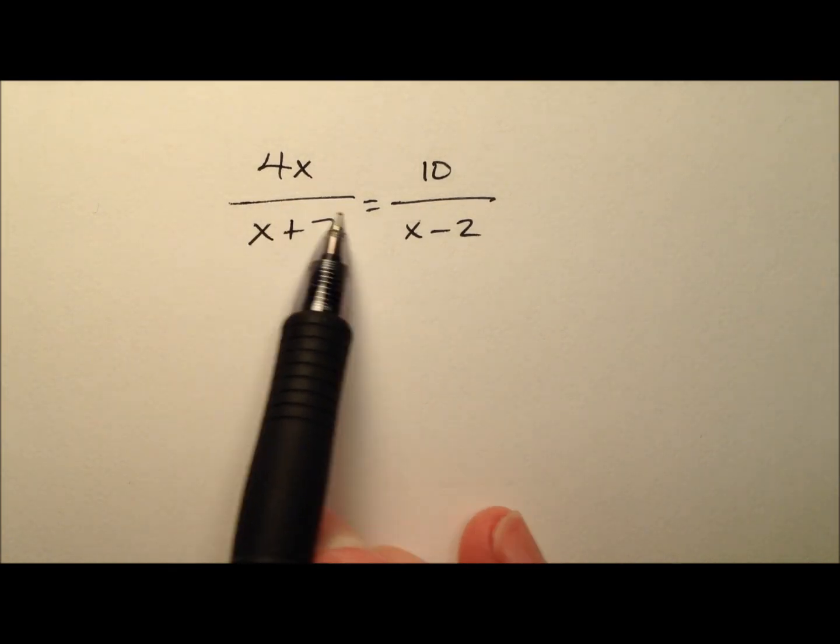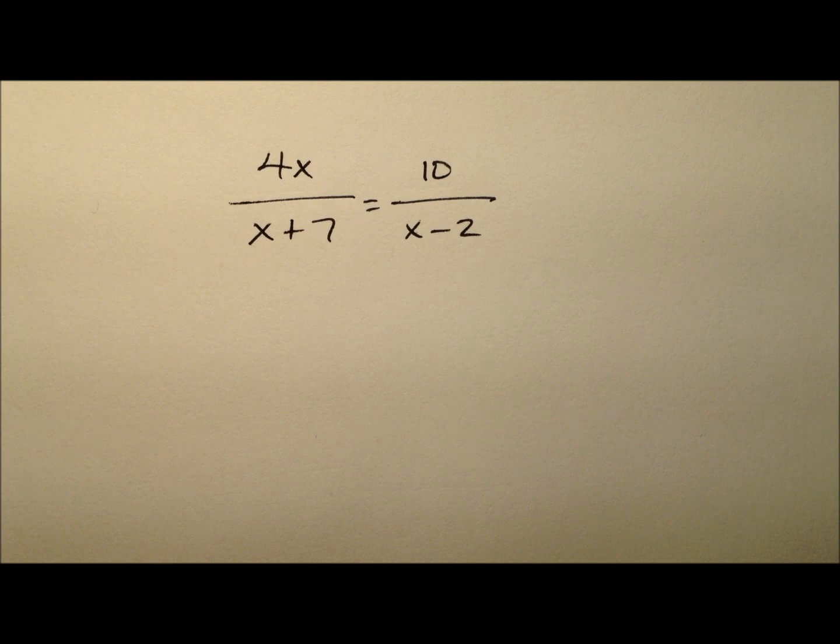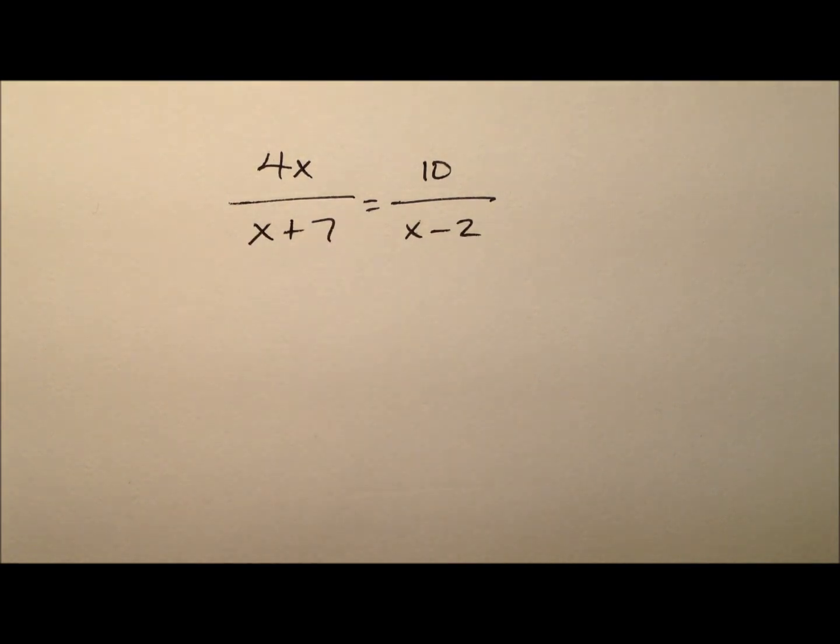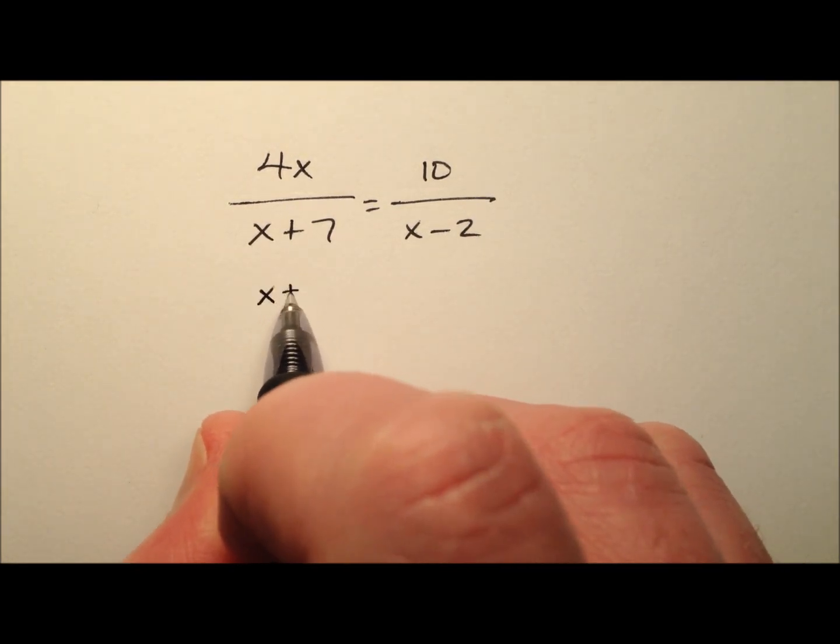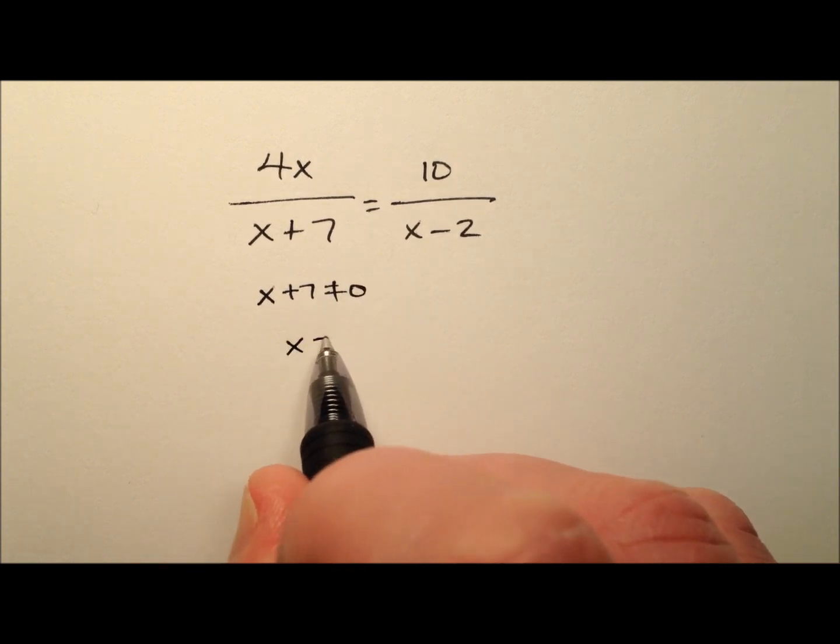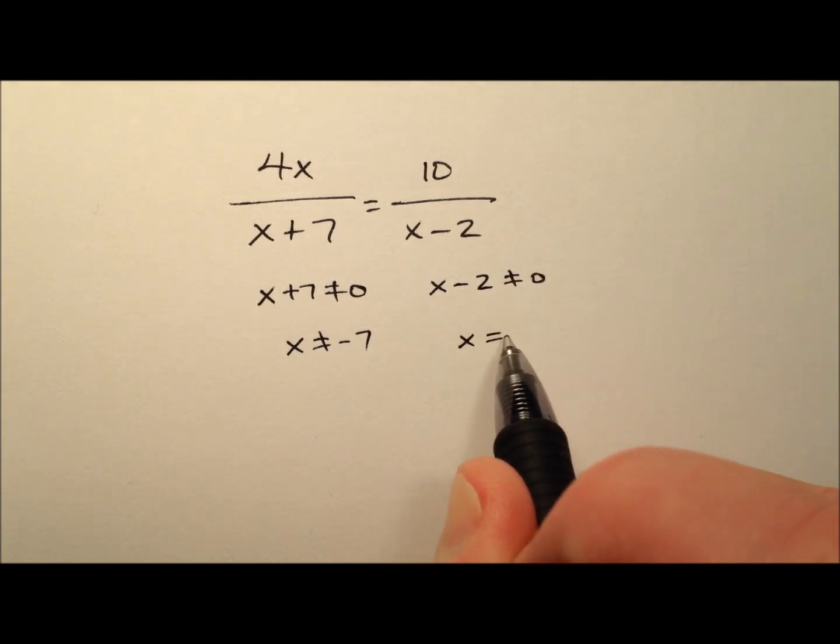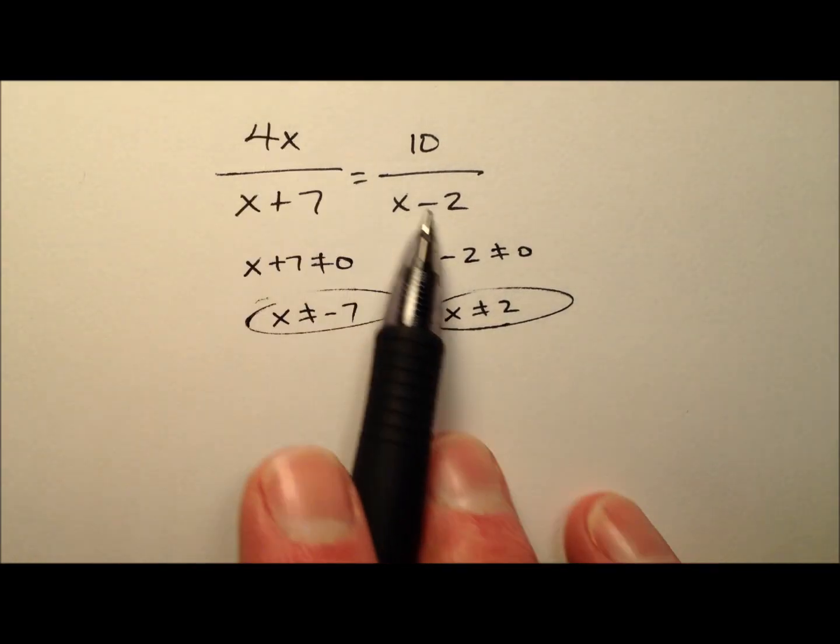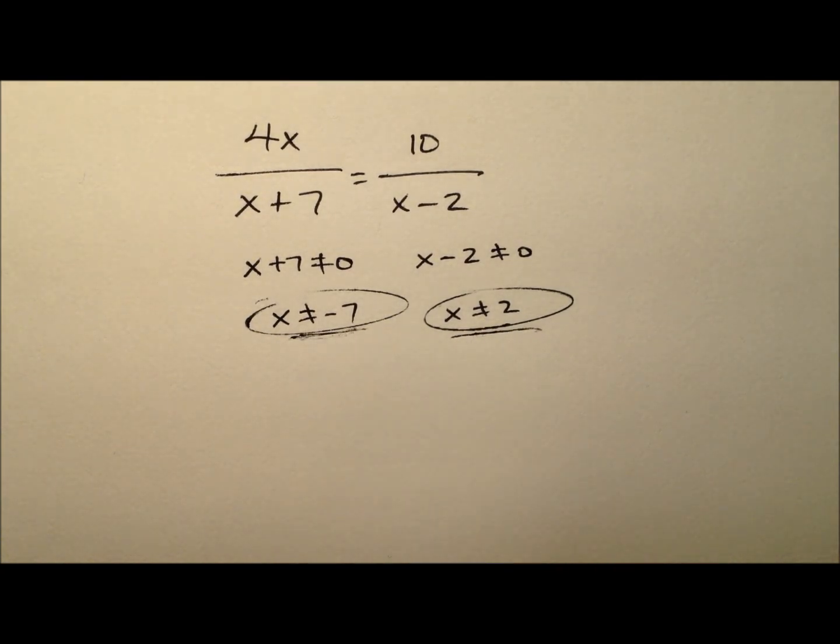But before we get too far, let's look at these denominators. I see I have x plus 7 and x minus 2. When you have a variable in the denominator, you have to make sure that the value of x cannot be something that's going to cause a 0 down here because we can't divide by 0. So x plus 7 cannot be 0, which means x cannot be negative 7. We also know that x minus 2 cannot be 0, so x cannot be 2. So we have these two values that we need to watch out for. We're going to solve this like normal, but then we're going to inspect these values at the end to see if they are going to be a problem or not.